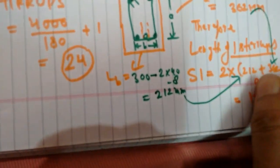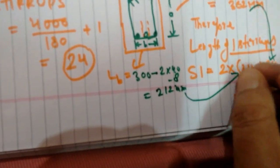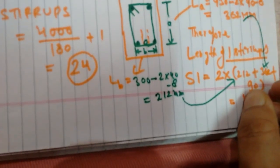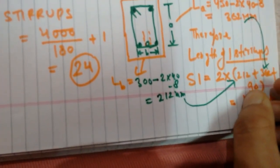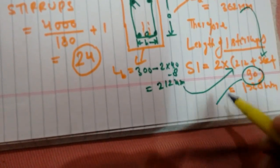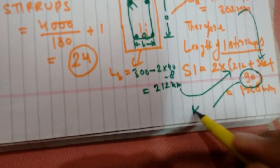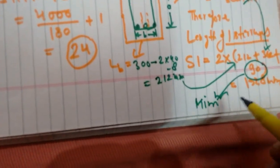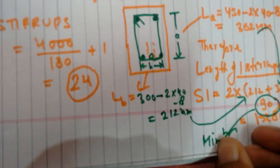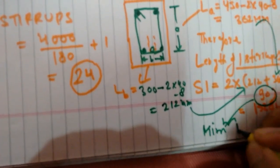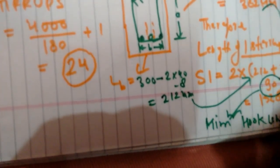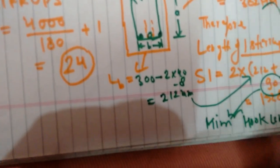The length of one stirrup is 2 into (LA plus LB) plus 90, where 90 is the minimum hook length.